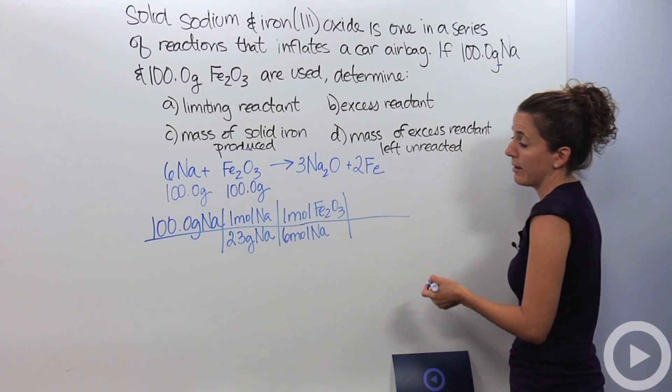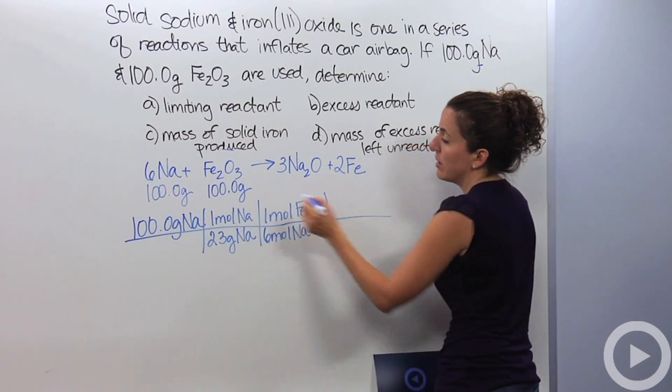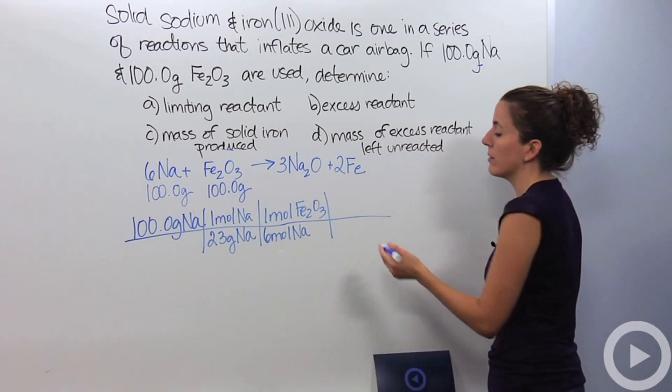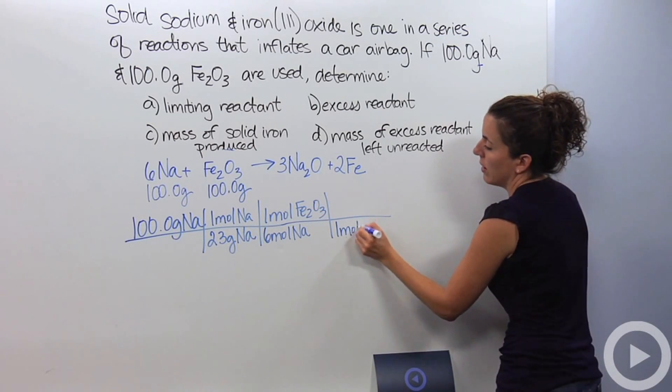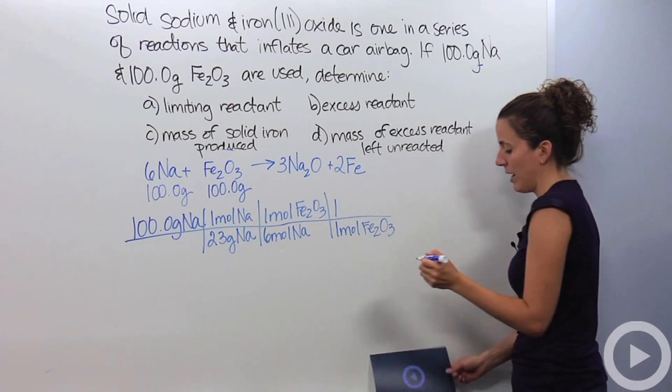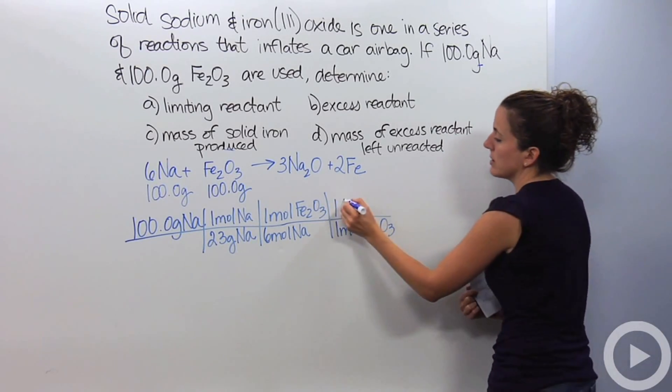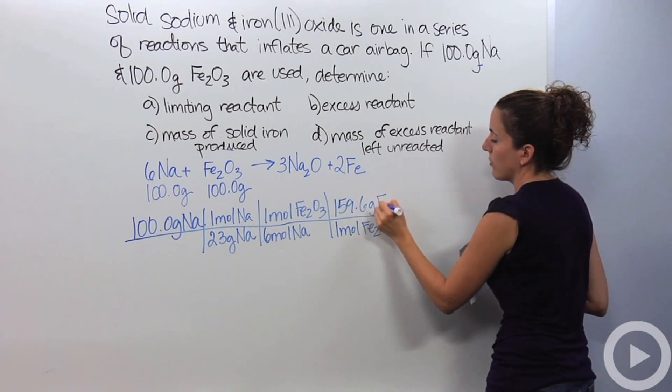Okay, so now I'm in moles of iron three oxide. I want to get to grams of iron three oxide. So, I want to compare the grams I get from here to this that I have in my possession. So, for every one mole of iron three oxide, looking at a periodic table, it's 159.6 grams of iron three oxide.